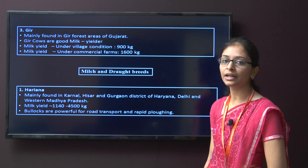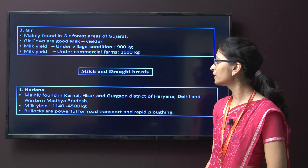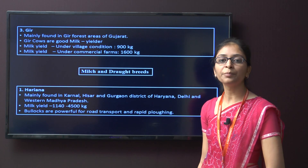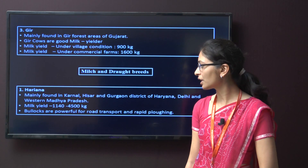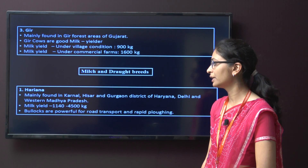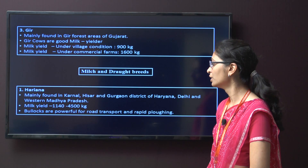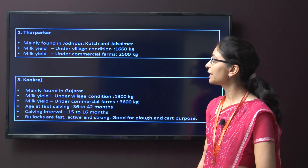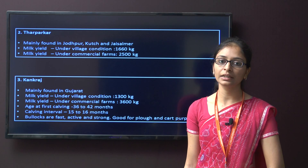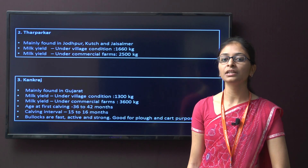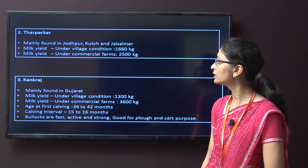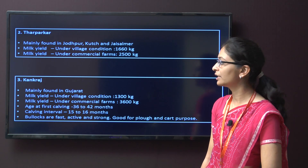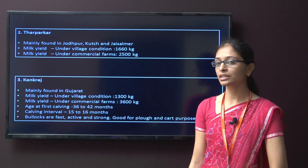Under dual purpose breeds, the first is Haryana. This breed is mainly found in Karnal, Hisar, and Gurgaon district of Haryana, Delhi, and western Madhya Pradesh. The milk yield for the Haryana breed is around 1140 to 4500 kg. The bullocks of this breed are powerful for road transport and rapid ploughing. Second is the Tharpakar breed, mainly found in Jodhpur, Kutch, and Jaisalmer in India. The milk yield under village condition is around 1660 kg, but under commercial farm it is around 2500 kg.